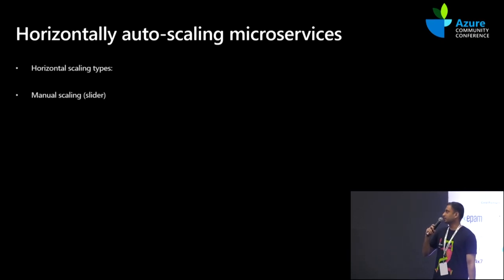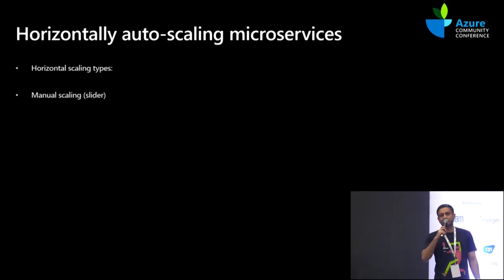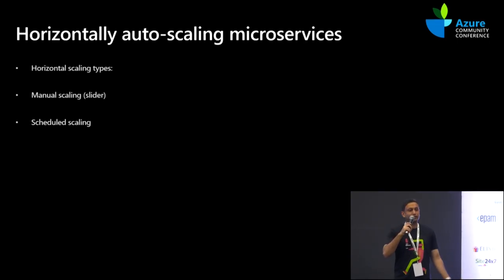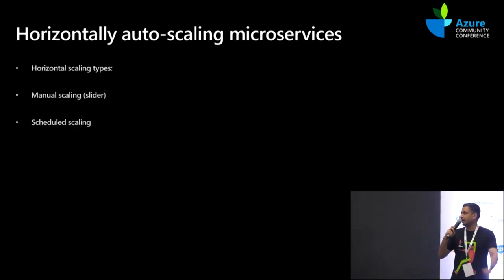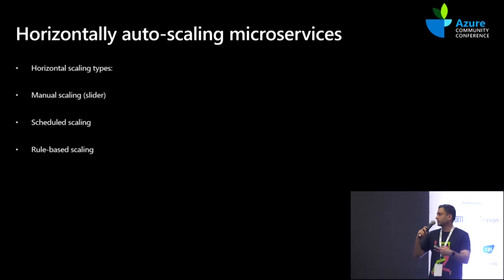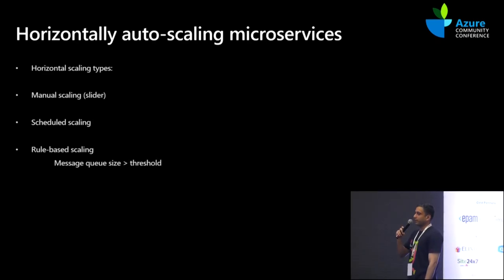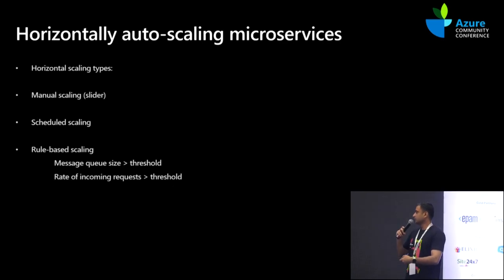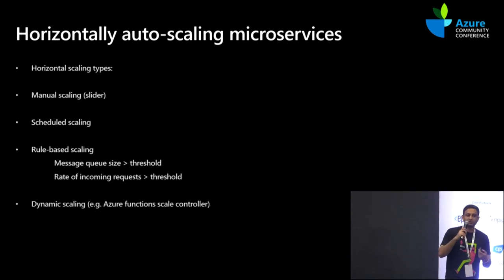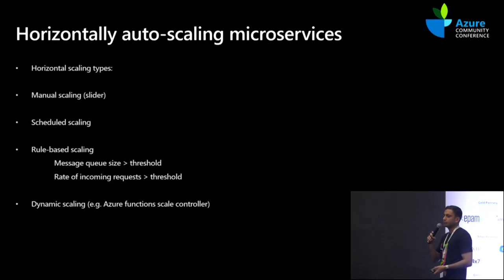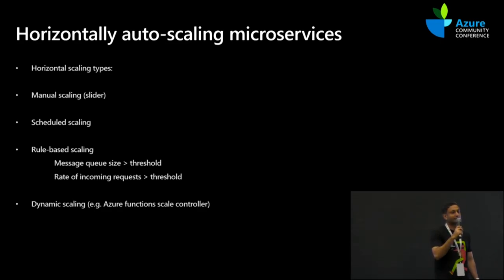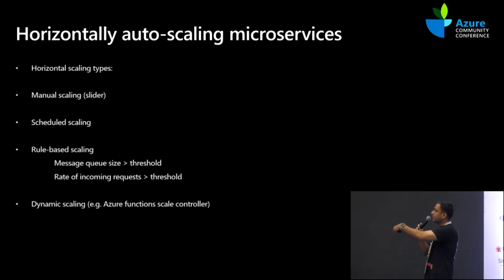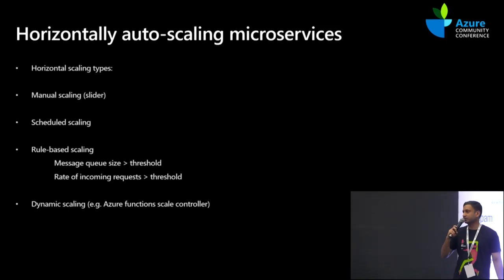For scaling types in Azure, there's a slider scale for app services at the app service plan level. There's schedule scaling — if your application is used heavily between 9 a.m. and 5 p.m., you scale it out at 9 and back in at 5. You can do rule-based scaling too — when the rate of incoming requests goes beyond a threshold, scale it out; when the message queue size exceeds something, scale it out. These are all JSON-based expressions and very easy to configure. Or just go with Azure Functions and use event-driven auto-scaling. Let the scale controller decide — the whole goal of serverless is I don't want to be in the business of figuring out scaling rules.